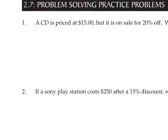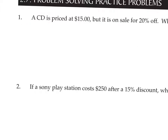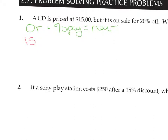I'm going to work these the same way we did in the lesson, with a little formula: the original times whatever percent you're paying — and that's not the percent of the discount — equals the new. So the original price for the CD is $15. Since it's on sale for 20% off, the percent you're paying is 80%, which in decimal is 0.80.